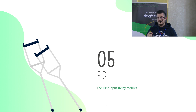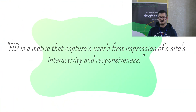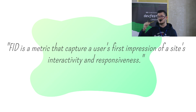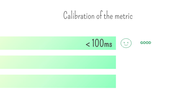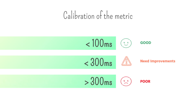Now for the last metric: FID, First Input Delay. FID captures a user's first impression of a site's interactivity and responsiveness. In other words, FID is the time between the moment when the user clicks on a button and the first line of your JavaScript code is executed. If the FID score is less than 100 milliseconds, your score is good. Between 100 and 300 milliseconds, it needs improvement. Above 300 milliseconds, big improvements must be done and the way you write your JavaScript code may need to be reviewed.